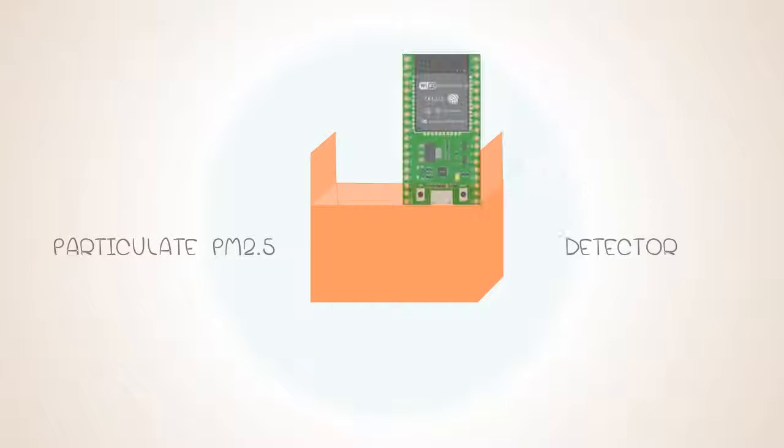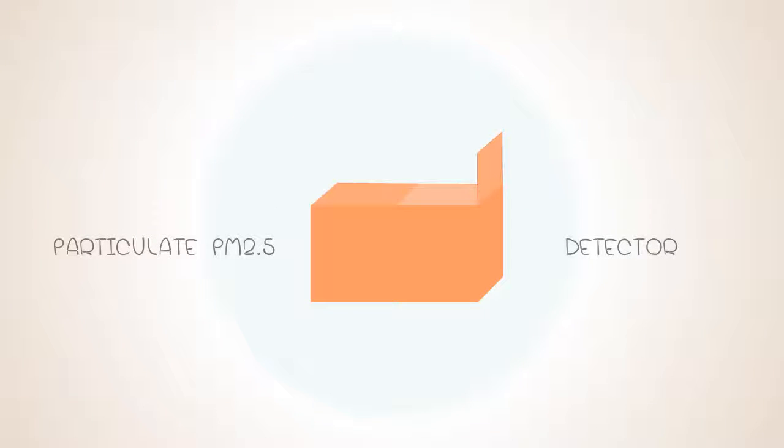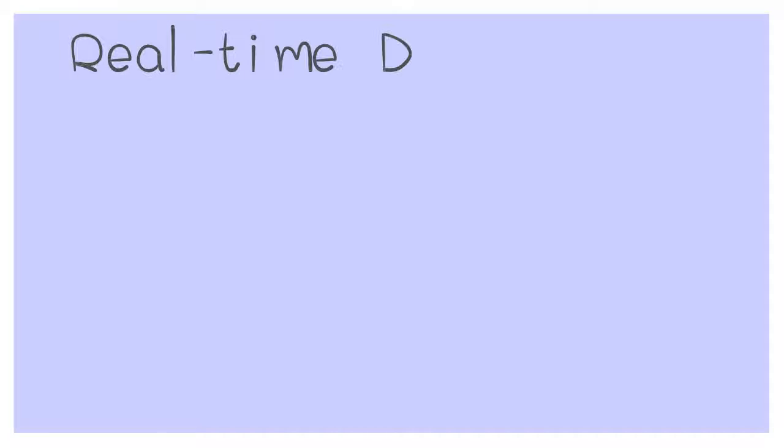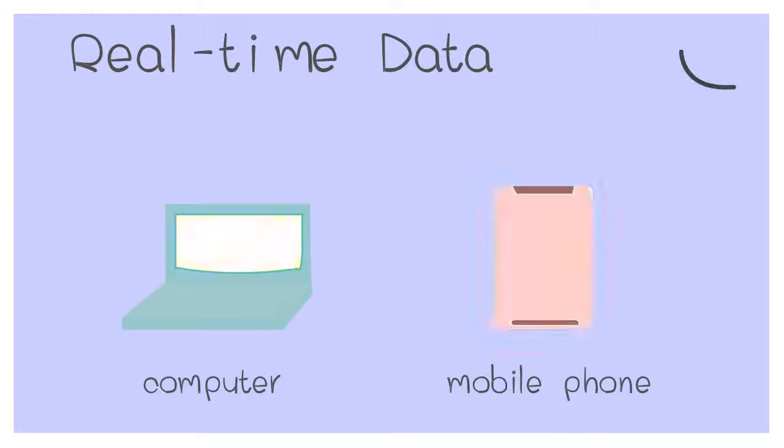Our air quality monitoring using particulate PM 2.5 detector has two main materials which are Nova test lite sensory and SPS 30. Real-time data from the sensor sends on the cloud to your computer and mobile phone.